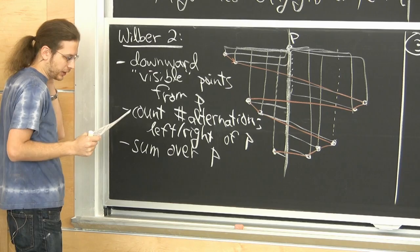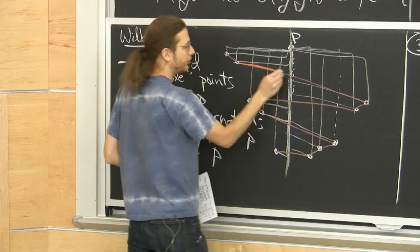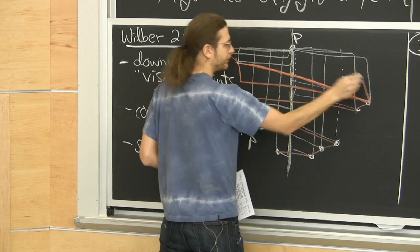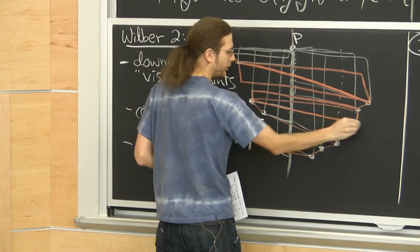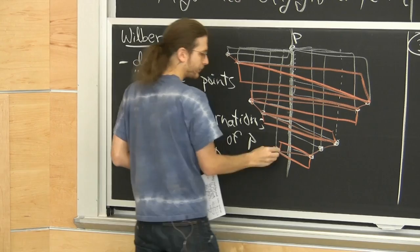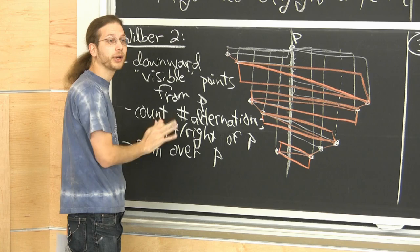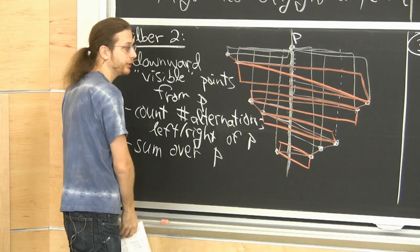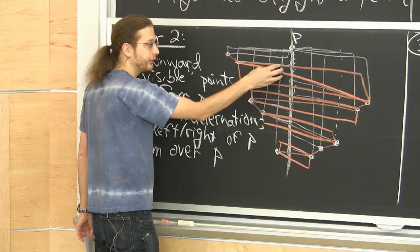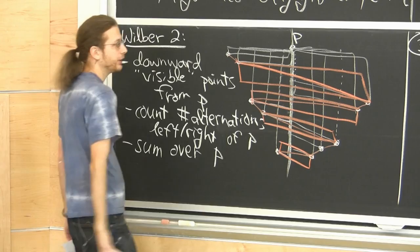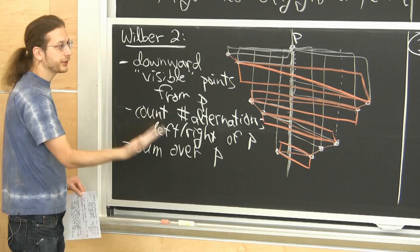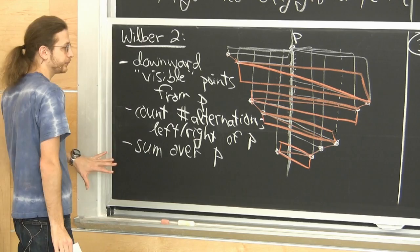Why is it a lower bound? Each alternation — each red line crossing P's vertical — gets turned into a box. The claim is that if you do this for all P, all those boxes are independent. By the independent rectangle lower bound, this is a lower bound on OPT up to a factor of 2.